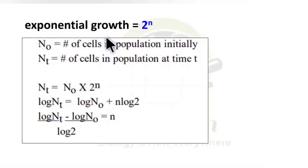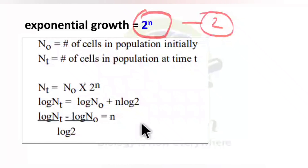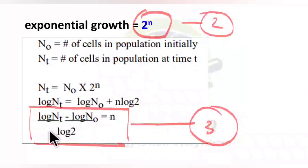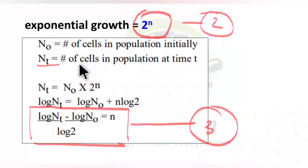The exponential growth is calculated by the formula 2ⁿ, where n is the number of generations. The third formula is: n = (log Nt − log N₀) / log 2, where N₀ is the initial number of bacterial cells and Nt is the cell population after a certain time period t. This formula gives you the number of generations, and it is also frequently asked.